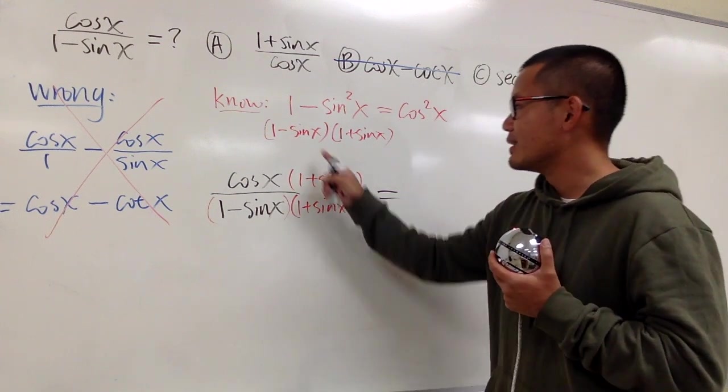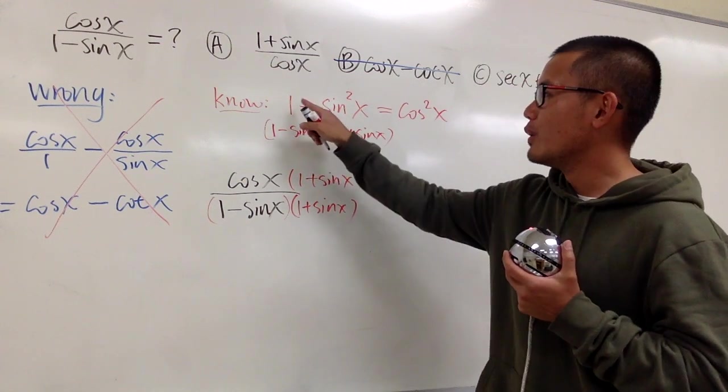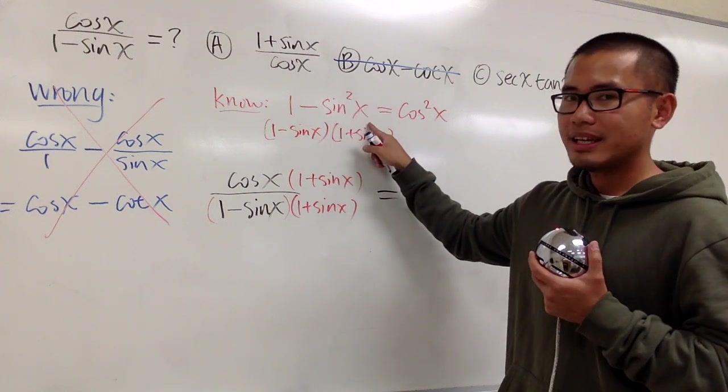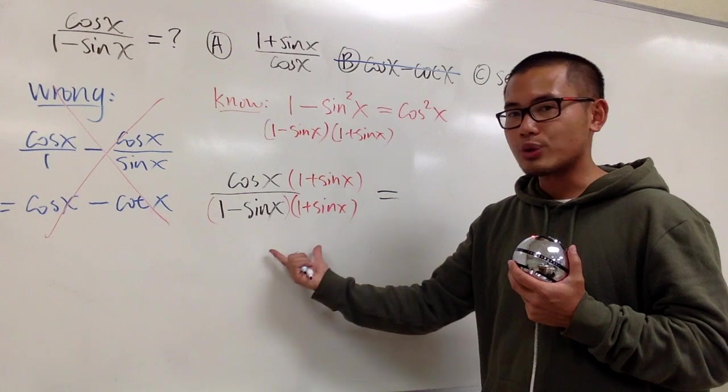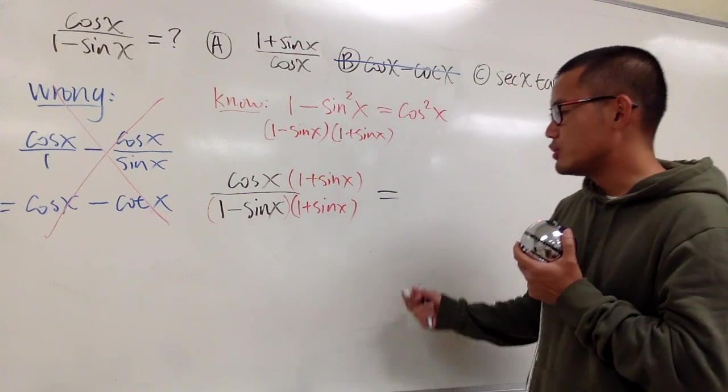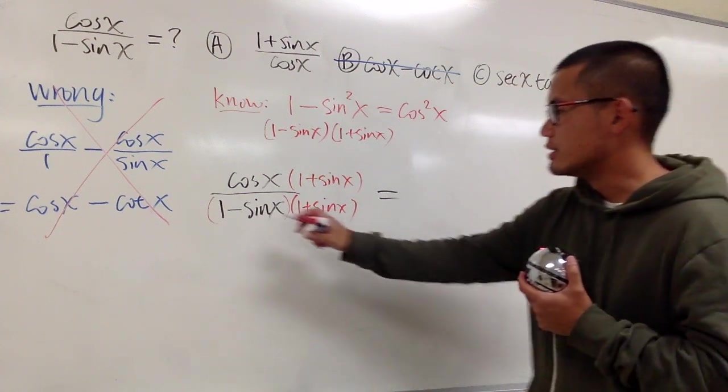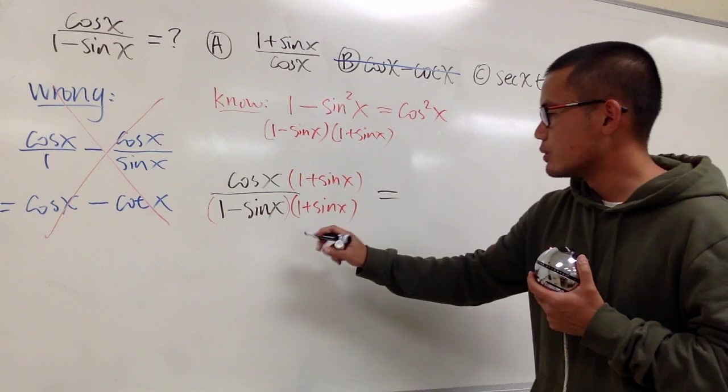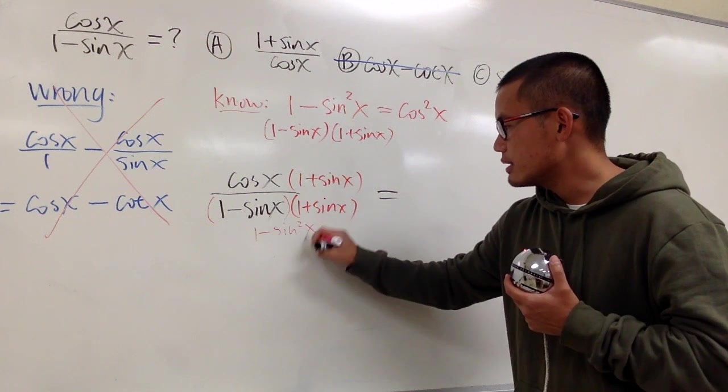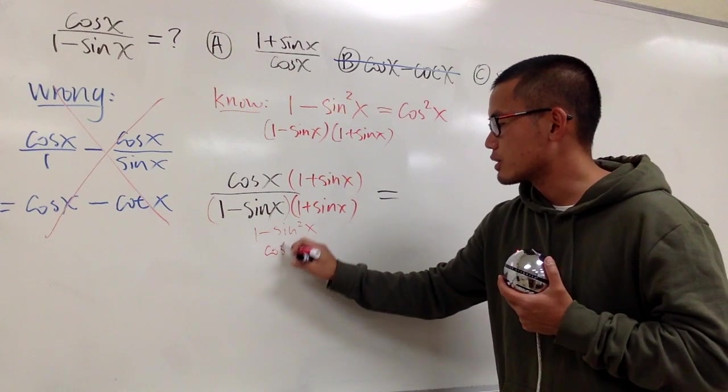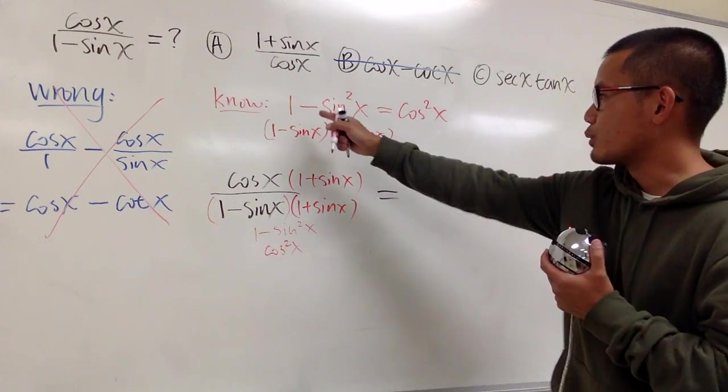Well, this times that, it's exactly 1 minus sine square x. We can put that down right here. If you would like to show all the steps again, you can say this is 1 minus sine square x, which is the same as just cosine square x. But we did that right here already.